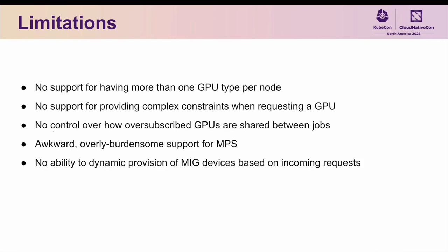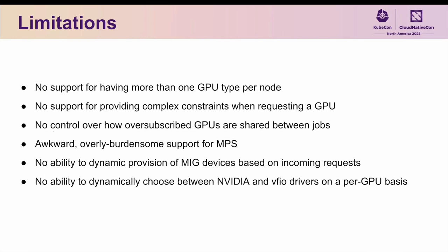There is currently no ability to dynamically provision MIG devices based on incoming resource requests. There are tricks you can do to add some level of dynamism to this process, but they are all shoehorned on top of the existing device plugin API, and involve complex logic to trick Kubernetes into doing the right thing, meaning that the official k8s device plugin for GPUs simply doesn't support this feature. There is also no way to dynamically associate some GPUs with the native NVIDIA GPU driver and others with the VFIO driver such that a mix of containers and VMs can be run on the same underlying node, and with the advent of confidential computing and hardware support for Hopper GPUs, this is becoming an increasingly common ask.